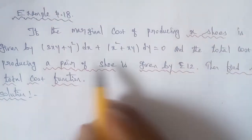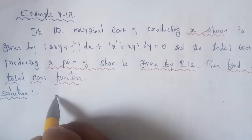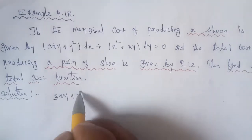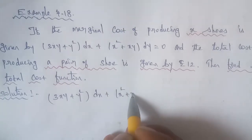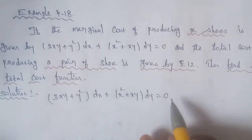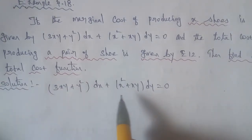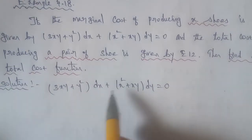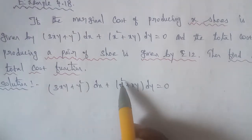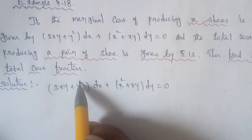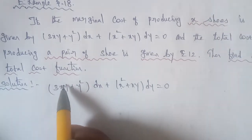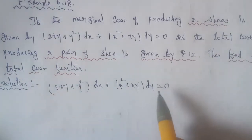So, given equation: (3xy + y²)dx + (x² + xy)dy = 0. First of all, is the given equation a homogeneous equation? Check the degree: x power 2, x power 1, x power 1 — total degree 2. And y² — degree 2. So the given equation is a homogeneous differential equation.